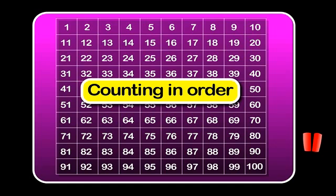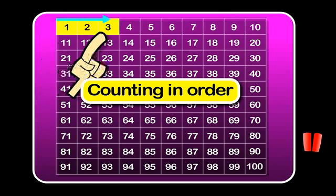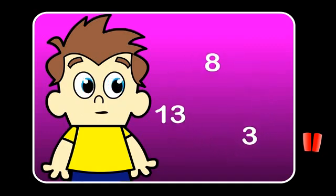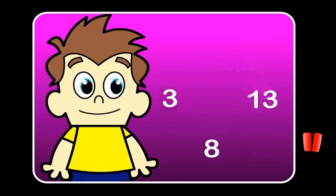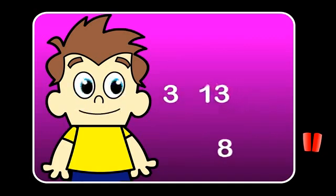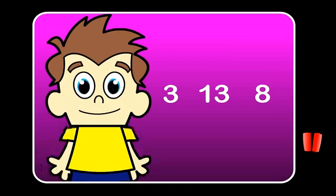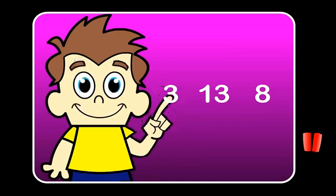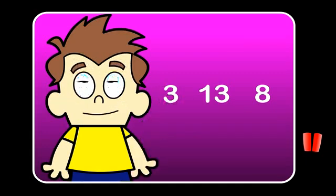We are counting in order from the smallest number to the highest number. What if I had these three numbers: 3, 13, 8? Can I put them in order? Yes — it doesn't matter if they are not consecutive or following numbers, you can still order them. All you have to do is find the smallest number, then the number that would come next if you were counting, then the largest number.